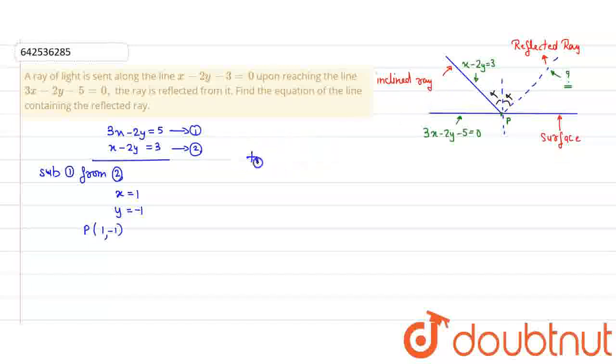So, if tan alpha is equal to m1 minus m2 upon 1 plus m1 m2, and I have a slope m, I will write the slope of the normal. Slope of normal form.